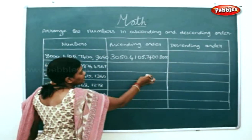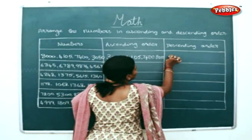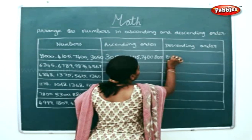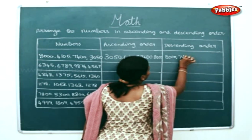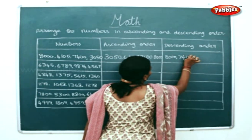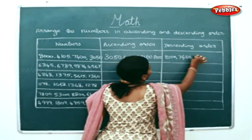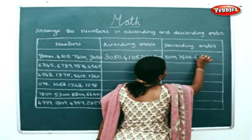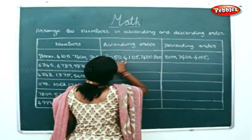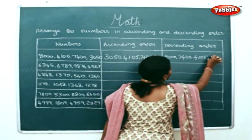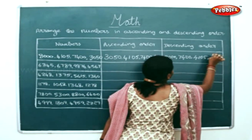Descending order, as I told you, is just the reverse of the ascending order. So: 8000, 7400, 4105, and the least will be 3050.